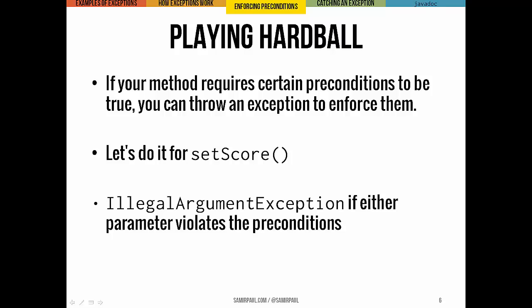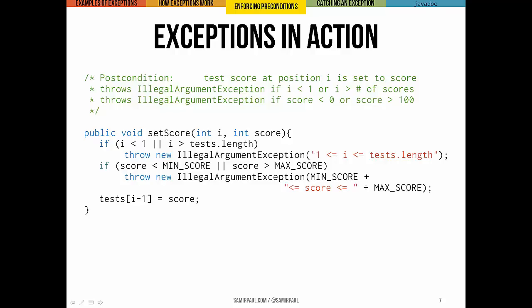Now because the method is either going to succeed or it's going to throw an exception, we'll make it return void rather than Boolean. Let's take a look at the method header. The post condition here is just that the test score at position i gets set to the score. We're throwing an illegal argument exception if i is outside the acceptable range. We're also going to throw an illegal argument exception if the score is outside of 0 to 100. If i is outside the range, throw a new illegal argument exception with an appropriate message. We'll also check to see if the score is correct, and if it's not, throw an argument exception there — constructing a string that will be helpful if we have to trace through the exceptions thrown. And last of all, if neither of those exceptions gets thrown, we'll actually set element i-1 to score.